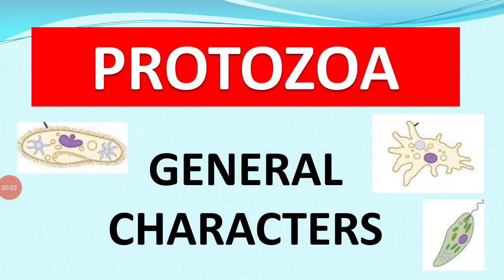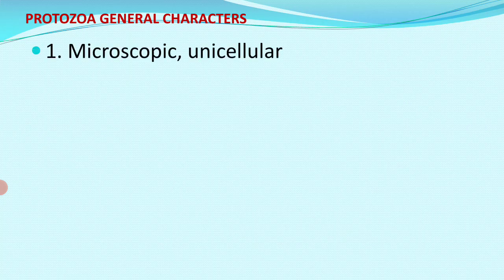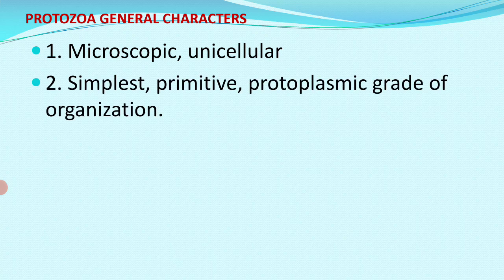Protozoan organisms are microscopic organisms made by a single cell, so called unicellular. They cannot ordinarily be seen without a microscope. The body is simple and these are the most primitive of all animals, with a protoplasmic grade of organization.